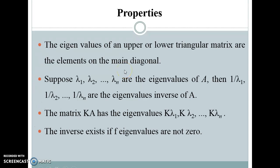The eigenvalues of an upper or lower triangular matrix are on the main diagonal. If lambda 1, lambda 2, ..., lambda n are the eigenvalues of A, then their reciprocals are the eigenvalues of A inverse. The matrix kA has eigenvalues k·lambda 1 through k·lambda n. The inverse exists only if the eigenvalues are not zero.